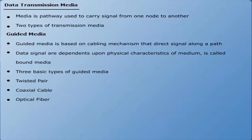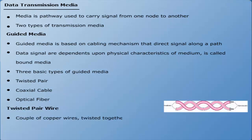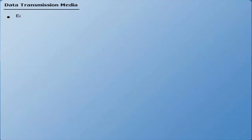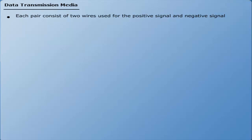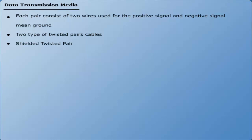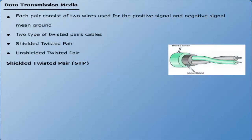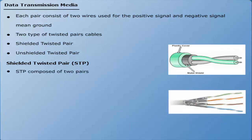Twisted pair wire consists of two copper wires twisted together and enfolded with a plastic coating. Each pair consists of two wires used for the positive and negative (ground) data signal. There are two kinds of twisted pair wire: shielded twisted pair (STP) and unshielded twisted pair (UTP). STP cable is composed of two cables twisted together and enclosed in a foil cover and copper shielding. STP uses shields to reduce outside interference or noise, and is more secure as it keeps the signal from leaking.